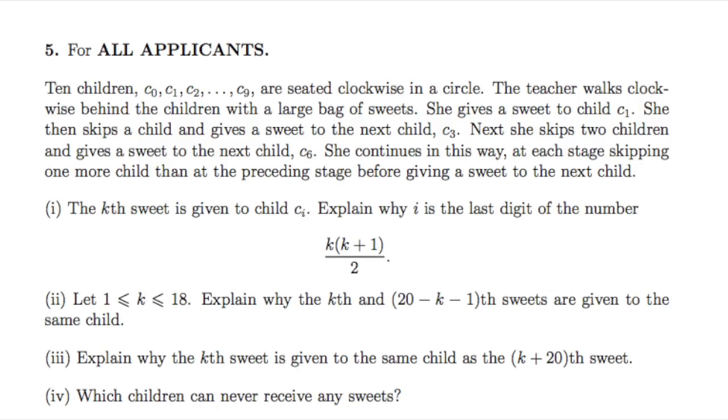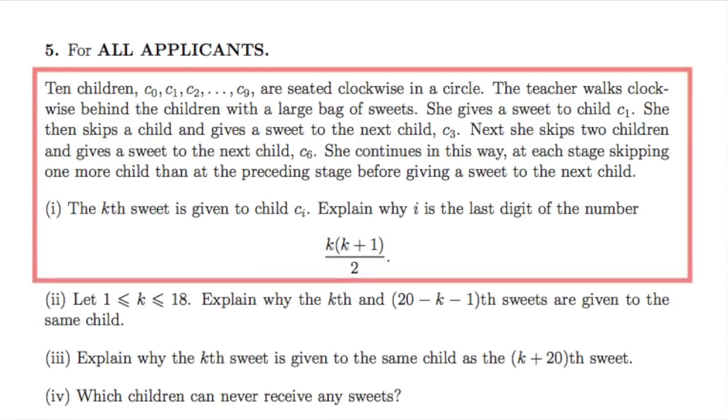10 children C0, C1 up to C9 are seated clockwise in a circle. The teacher walks clockwise behind the children with a large bag of sweets. She gives a sweet to the child C1. She then skips a child and gives a sweet to the next child C3. She then skips two children and gives a sweet to the next child C6. She continues in this way at each stage skipping one more child than at the preceding stage before giving a sweet to the next child.